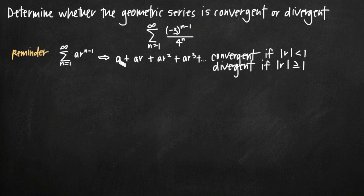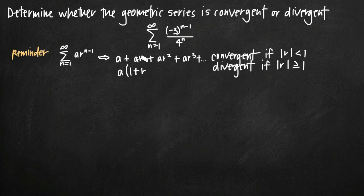This is the expanded form of a geometric series. What's really interesting is that we can factor out the value a from this series — each term is multiplied by a. When we factor out a, what remains inside is 1 plus r plus r squared plus r cubed plus r to the fourth, and so on. So here's our geometric series with a factored out.